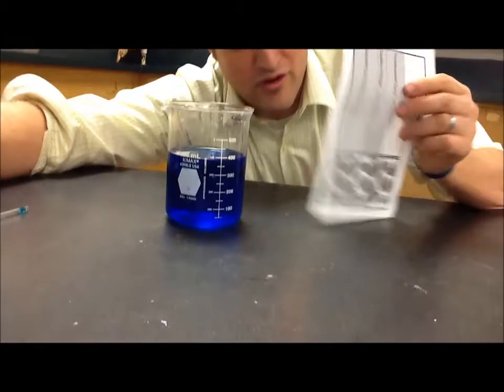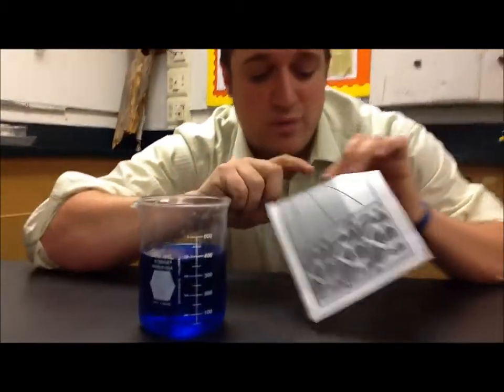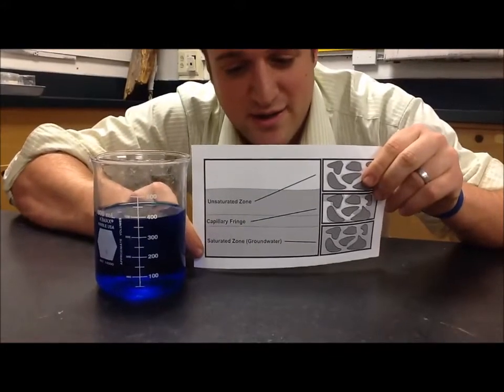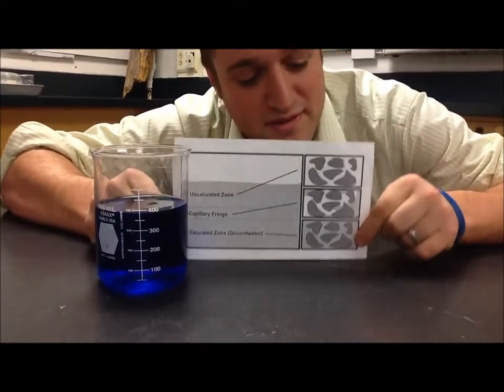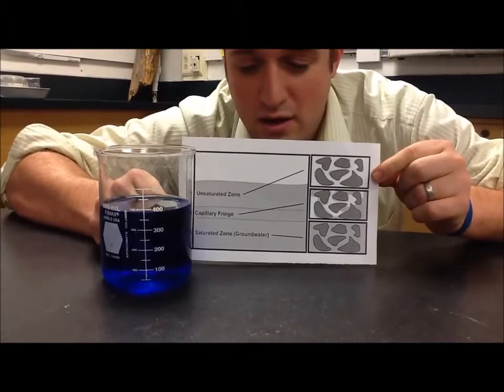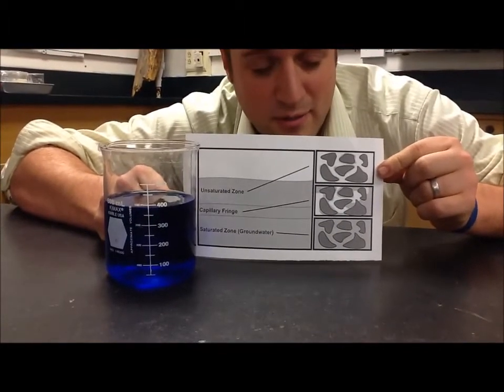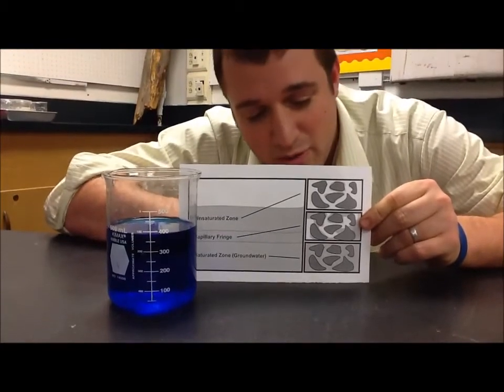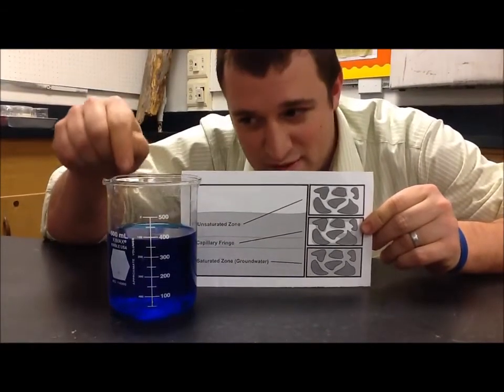The reason that this is important for class is when you have saturated ground. You have what's called the saturated zone and then the unsaturated zone where there's water between the particles and then air between the sand or the soil particles. You also have what's called a capillary fringe where some of the water is able to climb up by the same reason it climbed up here.